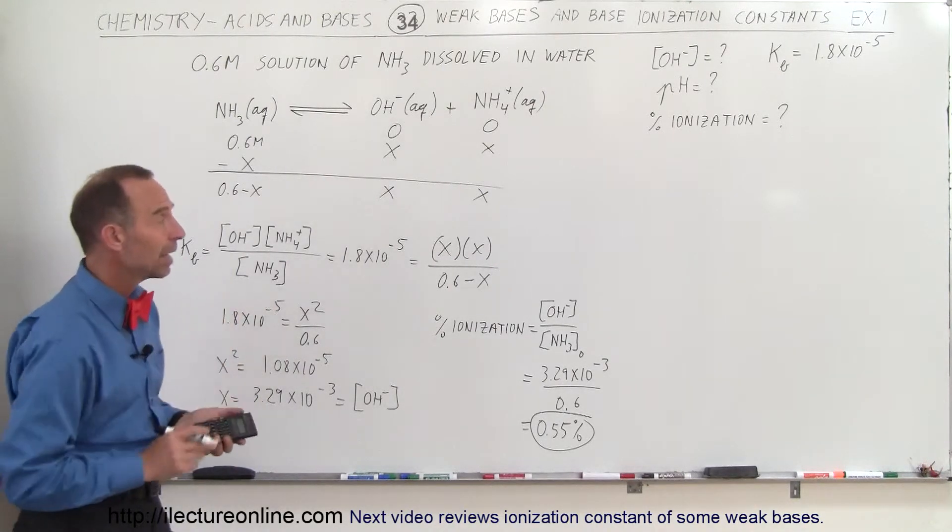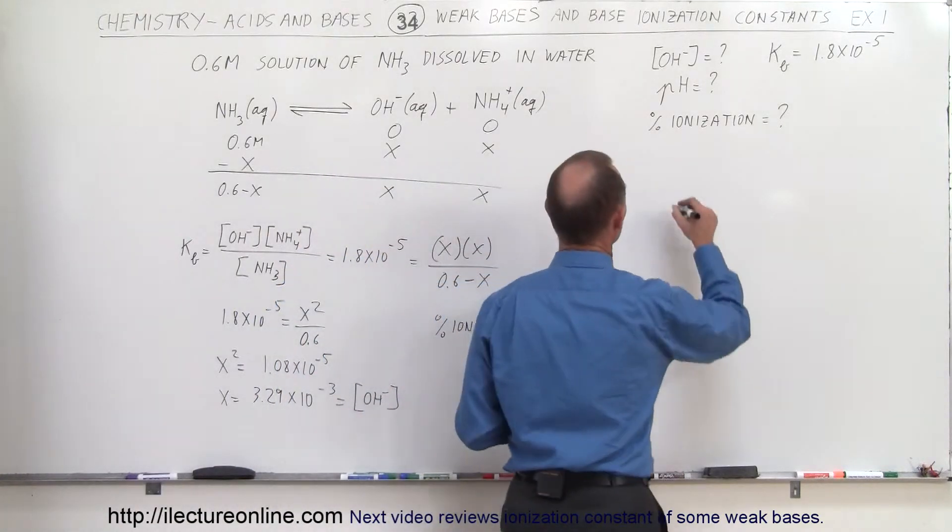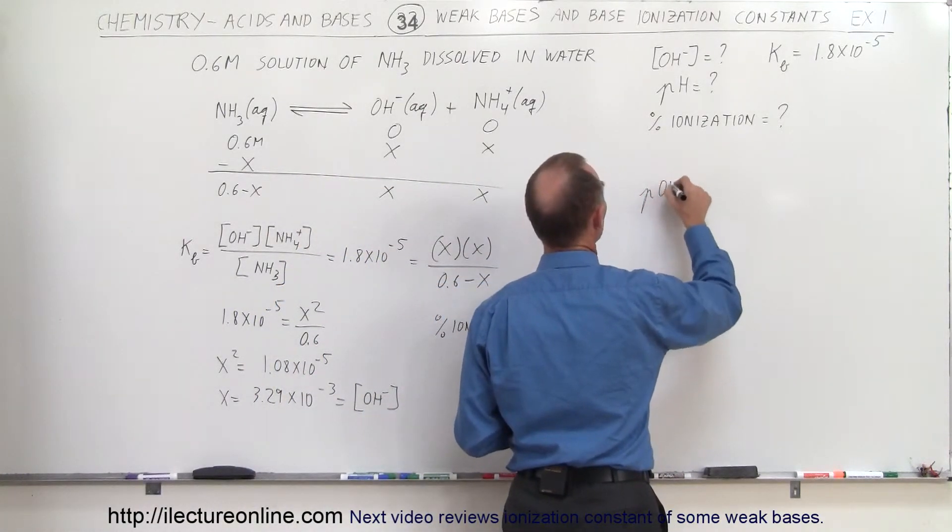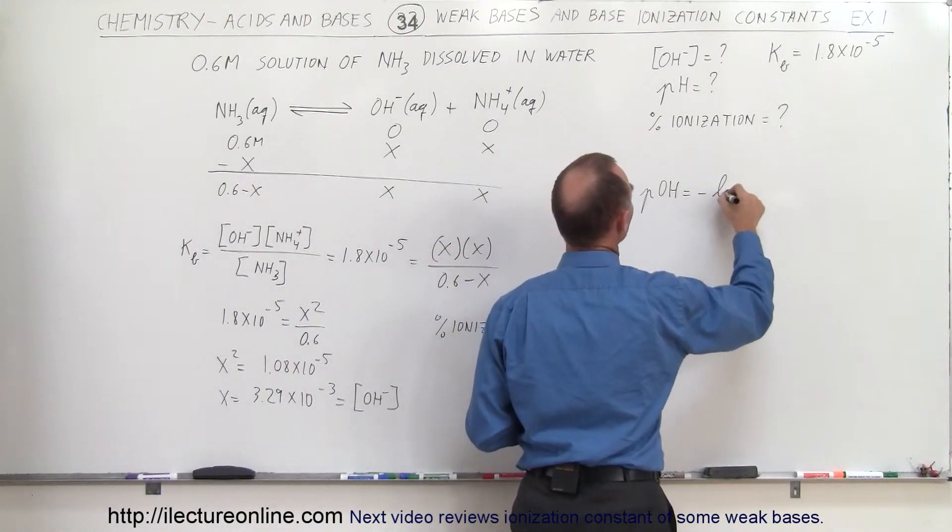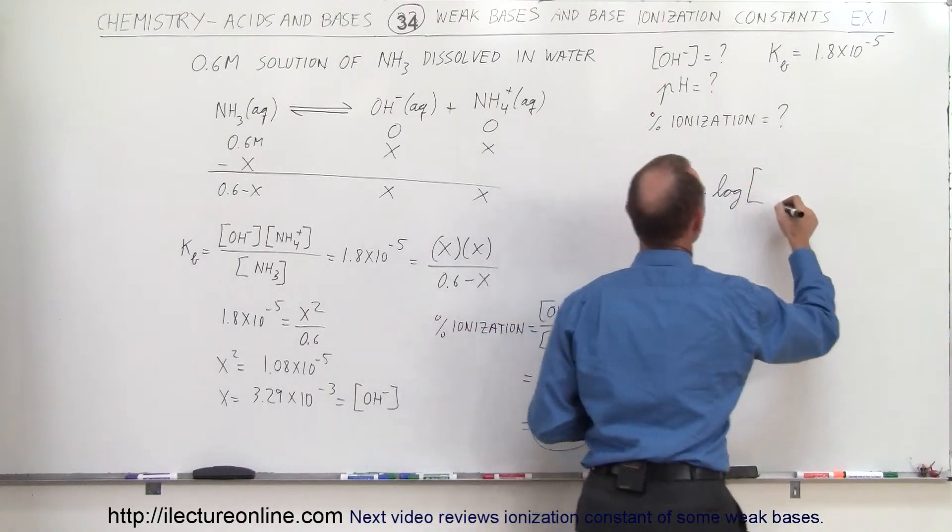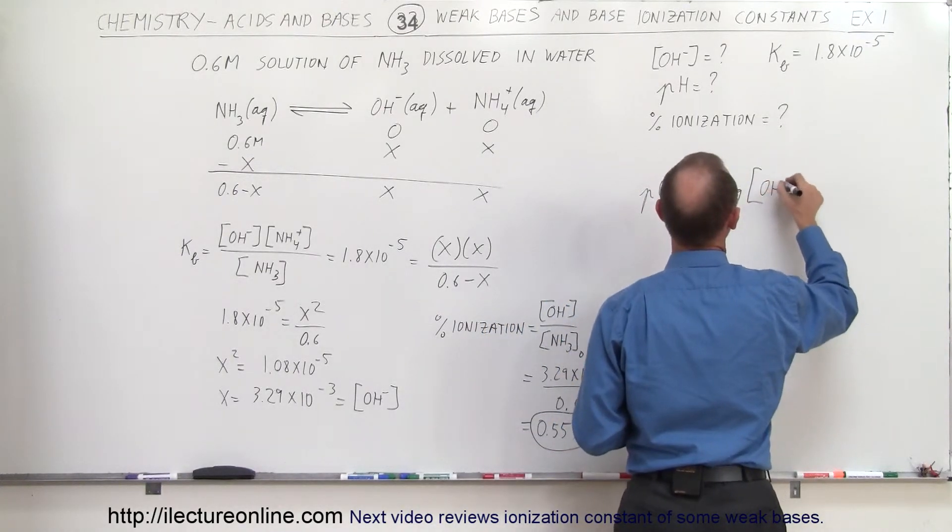So next, I'm going to find the pH, and so before I find the pH, I'm going to find the pOH. The pOH is equal to minus the log of the concentration of the hydroxide ion.